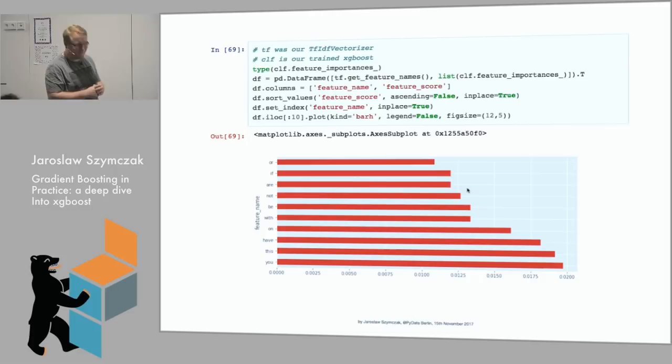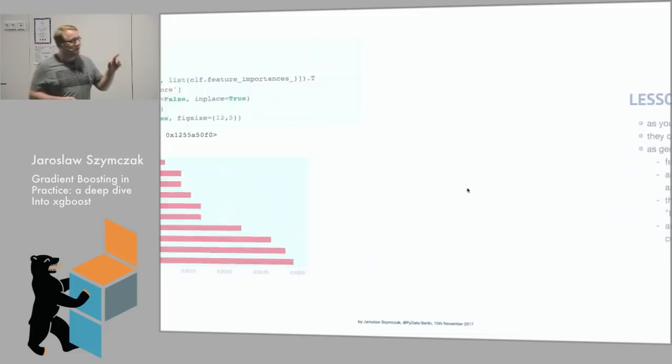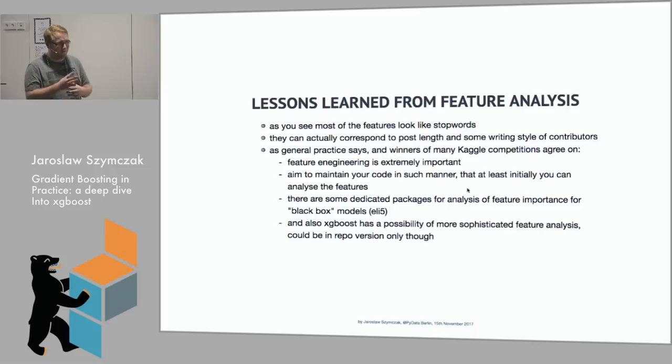Why feature importance is very, very significant thing. So what are the most important features? It's quite small. I will read it to you. You, this, have, on, with, be, not, are, if, or. So basically, we just make the classifier on stop words. And it still works quite well. That's why I argue that it's really important to actually not only tune your stuff with some hyperparameters and validation and so on because we did this. And still look what kind of features were significant.